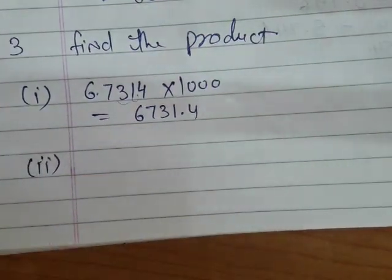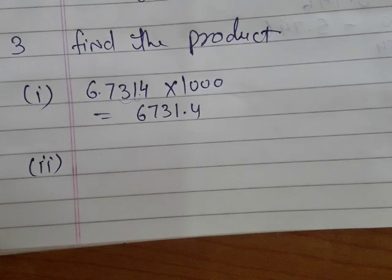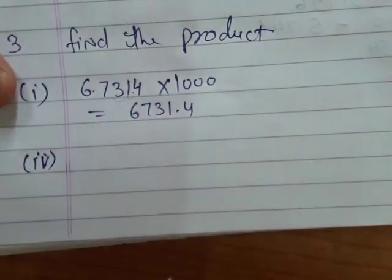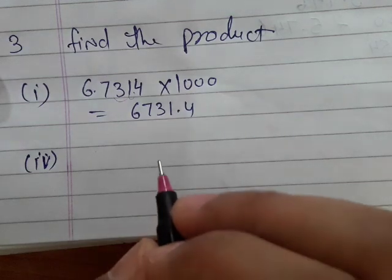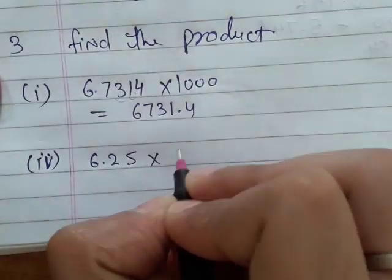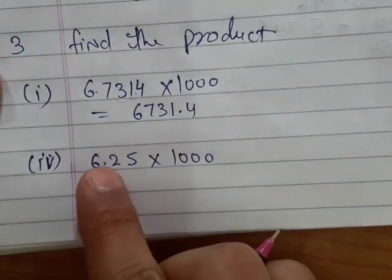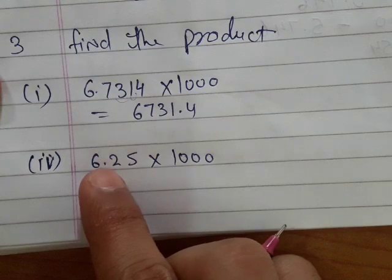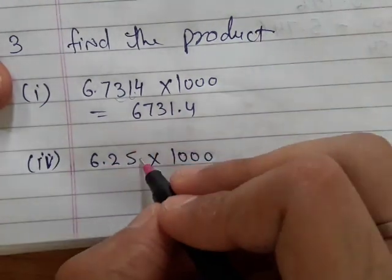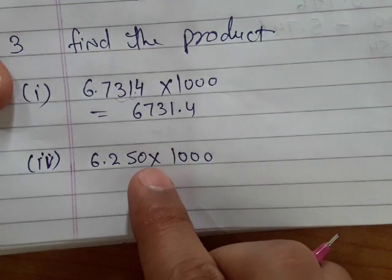We will solve the fourth part of this question. The fourth part is 6.25 multiplied by 1000. Here, we have to shift the decimal point 3 digits to the right side, but there are only 2 digits after the decimal. So if we add one zero here, the value of this decimal will remain unchanged.